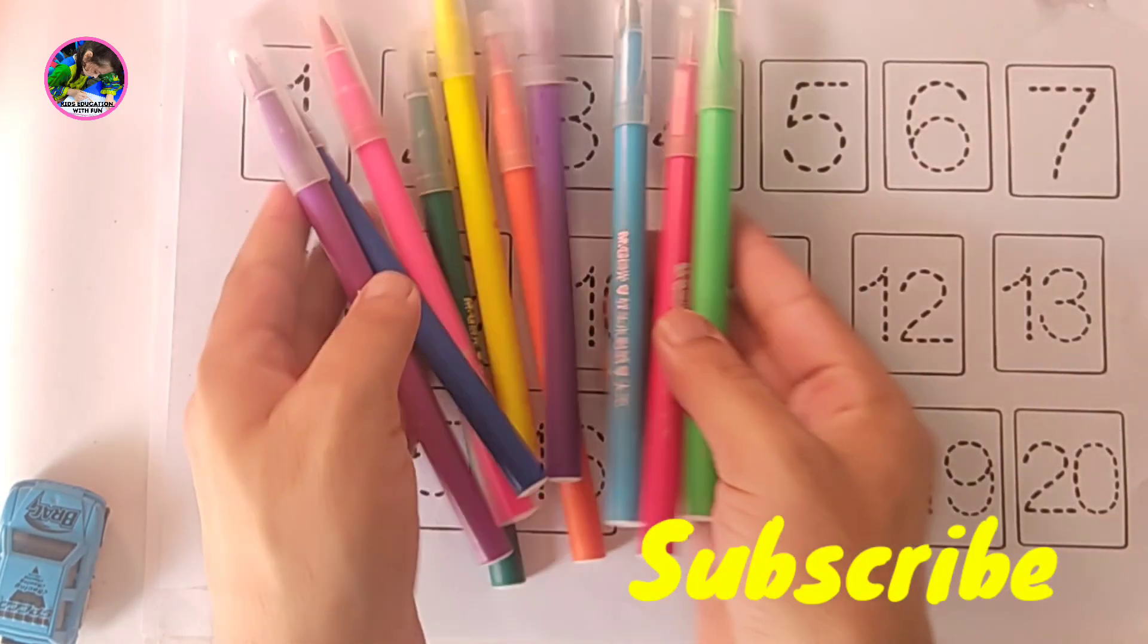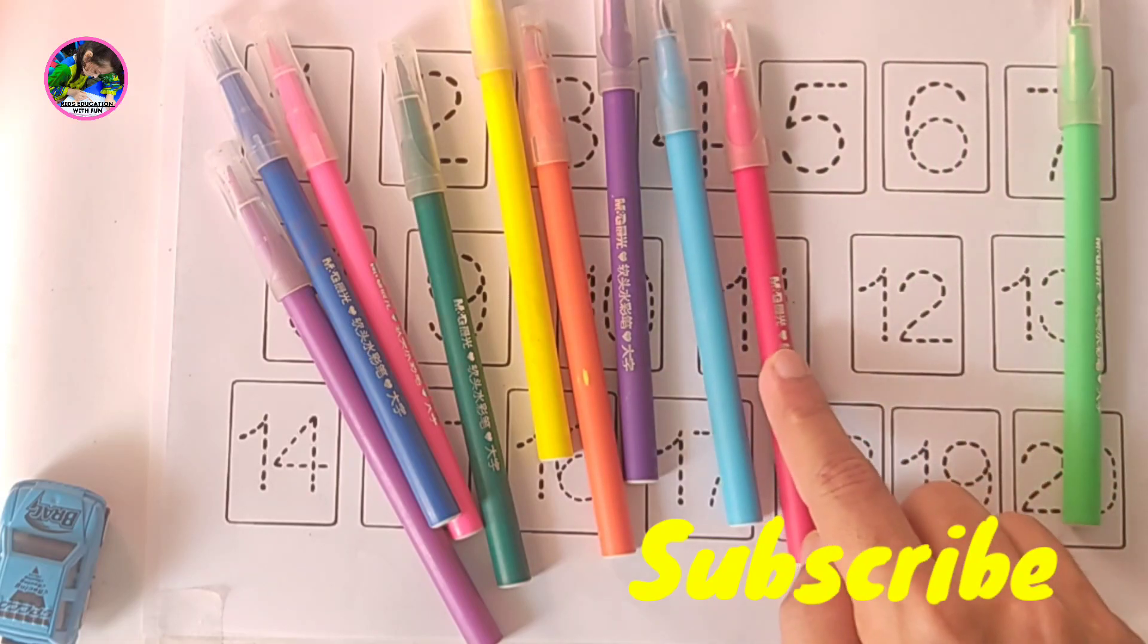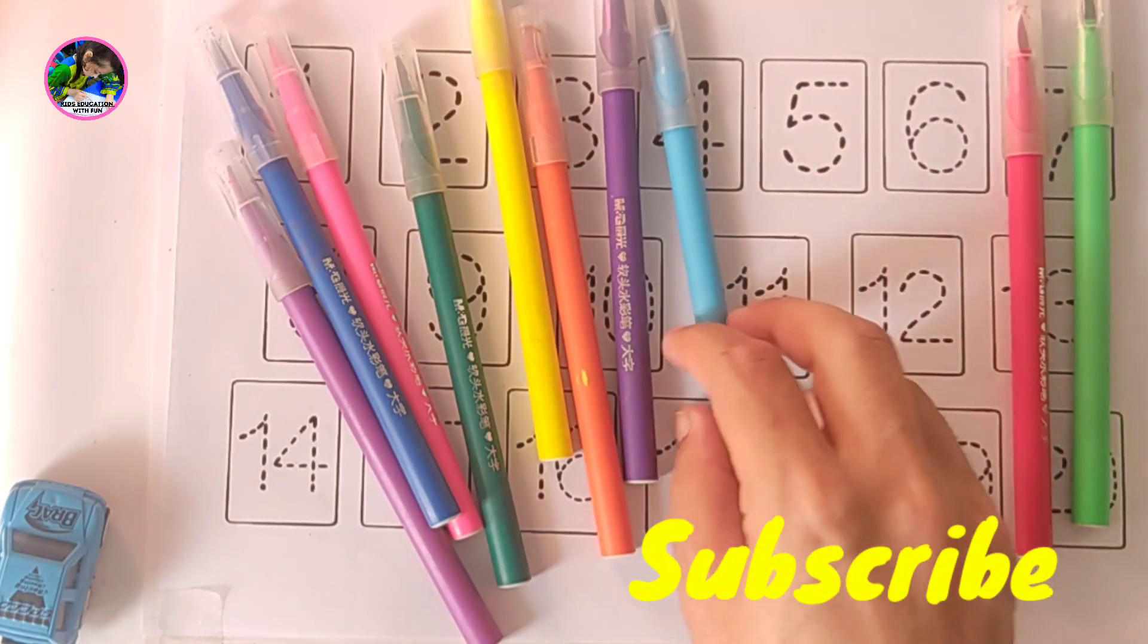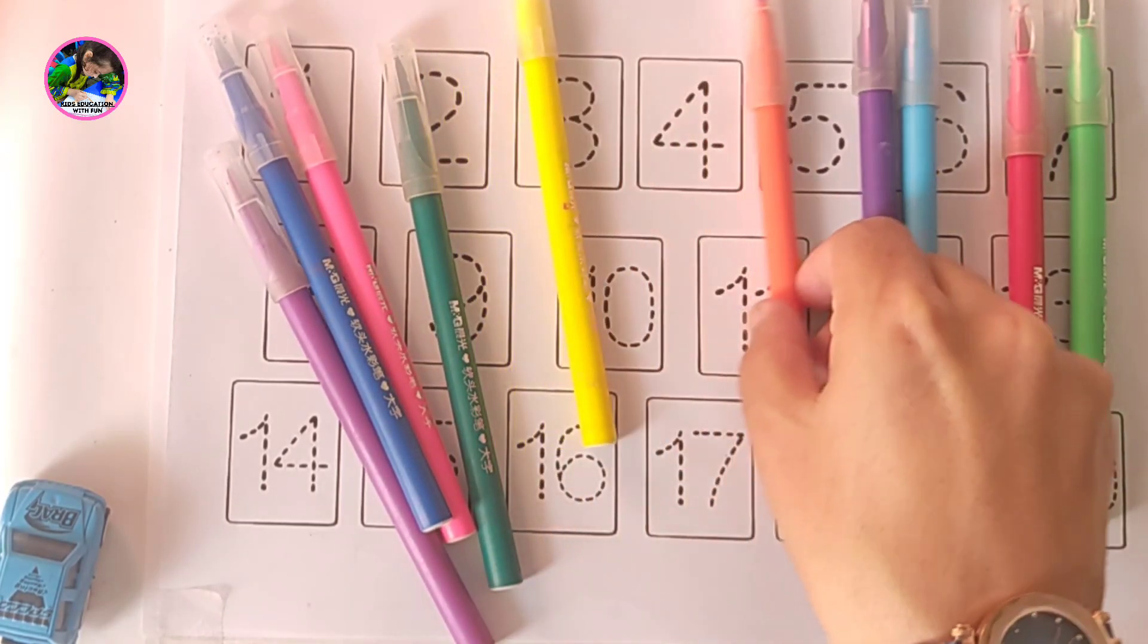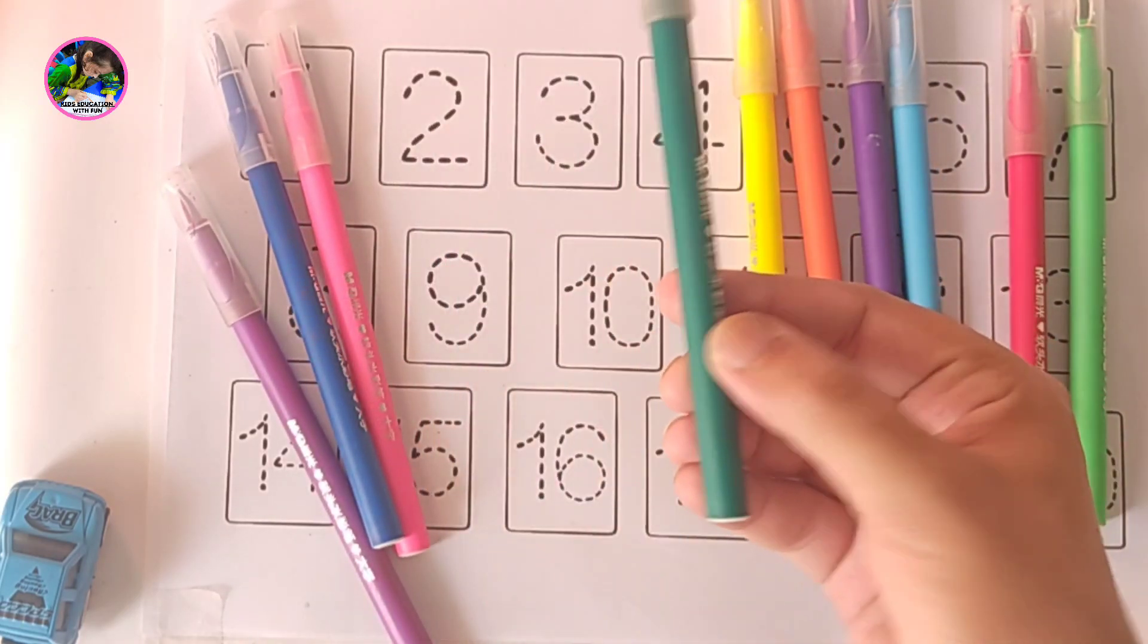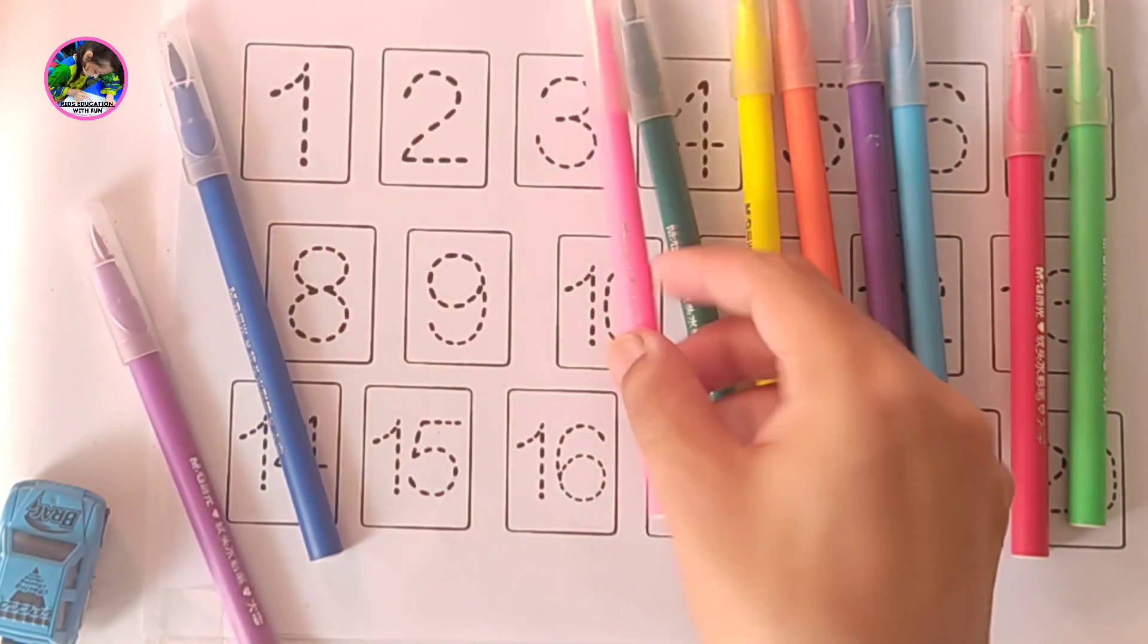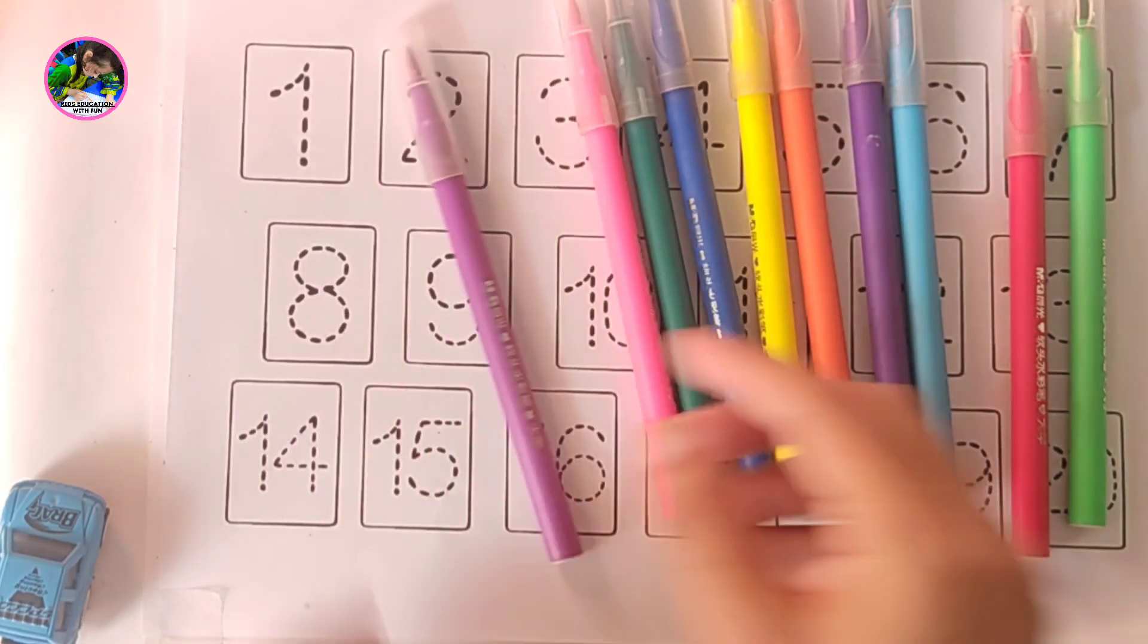We have these colors. These are our colors. Green color, red color, sky blue color, violet color, this is orange color, yellow color, dark green color, pink color, dark blue color, purple color.